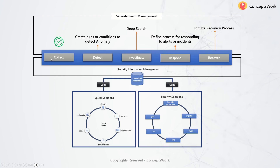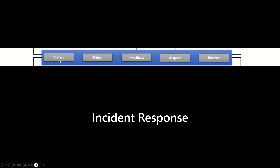This step-by-step set of activities is called Security Event Management — that means how you should behave and what should be done when there is any security event. If you look closely, these keywords also appear in the NIST Cybersecurity Framework as functions.